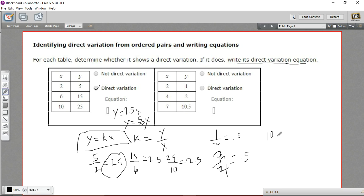And then we have 10.5 over 7. Now that is definitely not going to be one half. In fact, this is bigger than 1. So this is not direct variation.